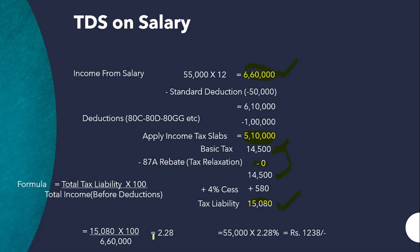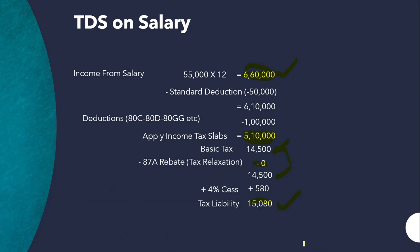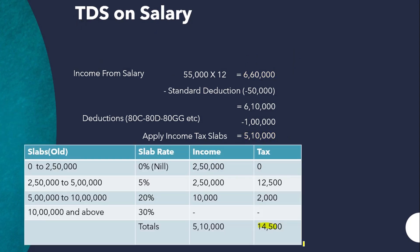So the TDS rate = (₹15,080 × 100) / ₹6,60,000 = 2.28%. As an employer, when making a payment of ₹55,000 per month, you need to deduct TDS at the average rate of 2.28%, which amounts to ₹1,254 per month.